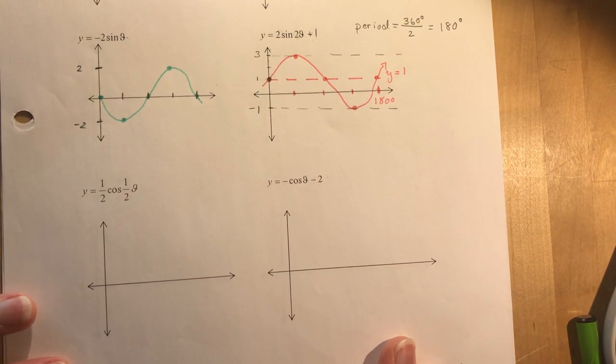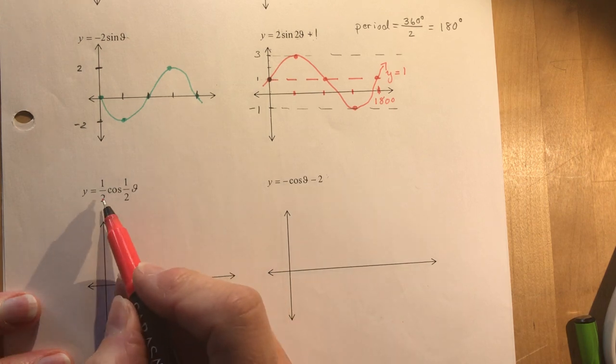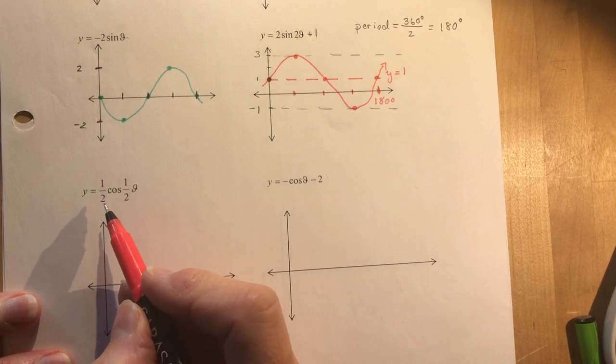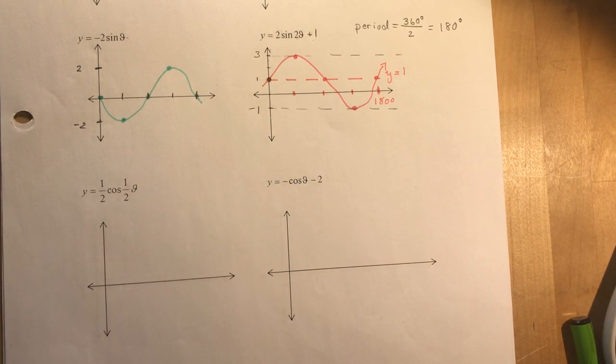Let's go to this one. One half cos one half theta. So I have a very small amplitude, it's only a half, right, half. And the period is the one I need to know first. So let's figure out what the period is going to be here. Do you remember the equation?